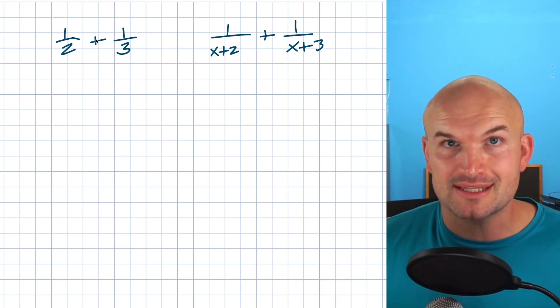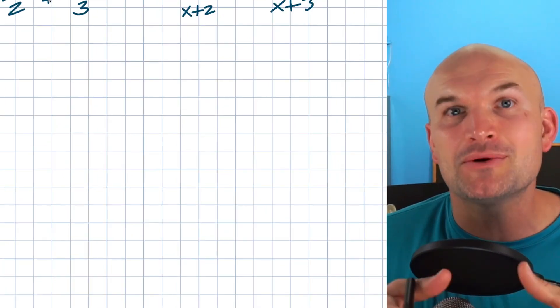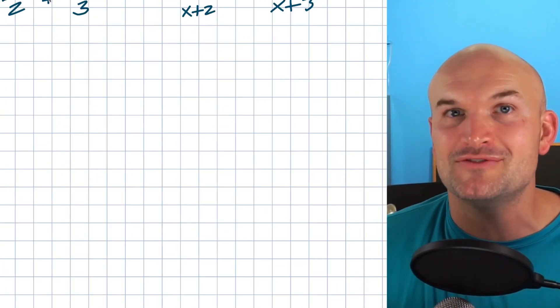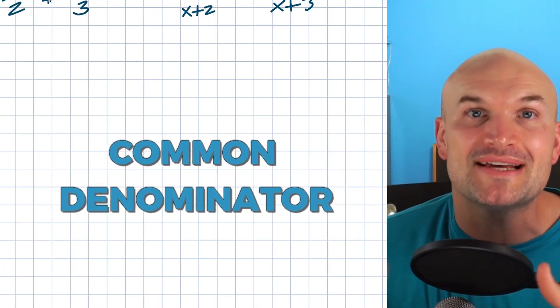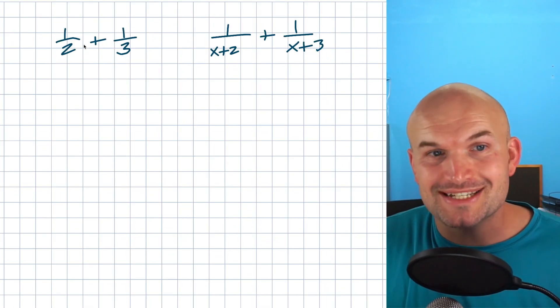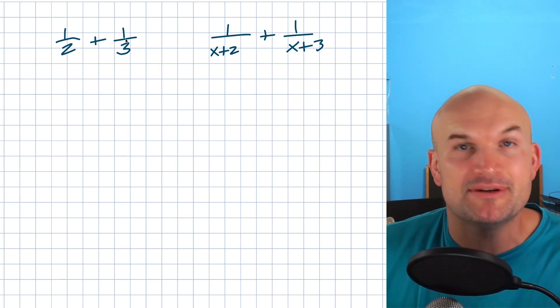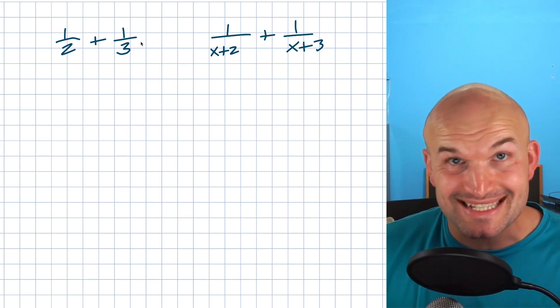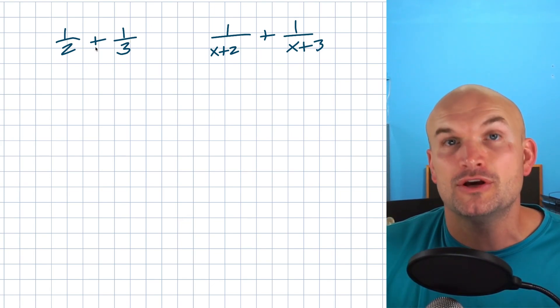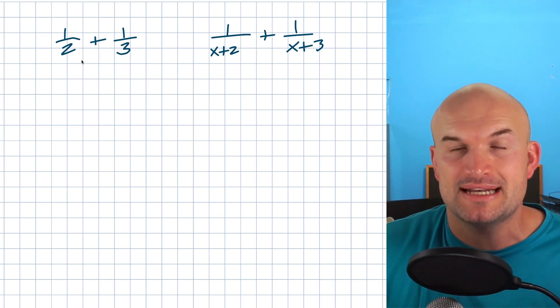Hopefully you remember the golden rule with fractions. Whenever you are adding and subtracting fractions, you have to have a common denominator. So we cannot just simply add across — this is not going to be two-fifths. That is not the answer. The only way we can add these is by finding a common denominator.